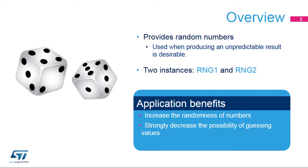The Random Number Generator or RNG integrated inside STM32 products provides random numbers which are used when producing an unpredictable result is desirable. Applications can benefit from the RNG to increase the randomness of numbers or to decrease the possibility of guessing certain values.